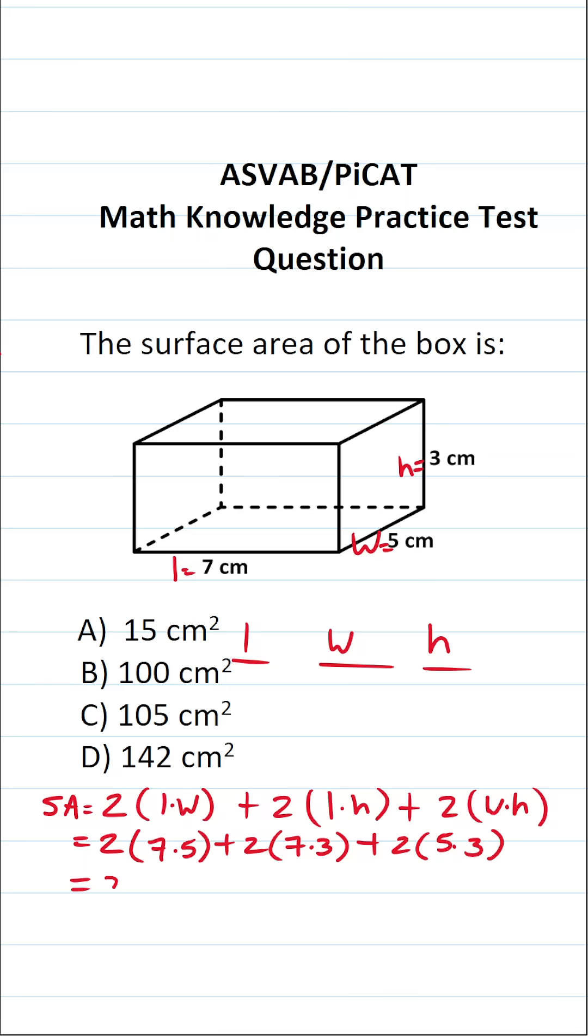Let's work this out. Seven times five is 35 plus two, seven times three is 21 plus two, five times three is 15.